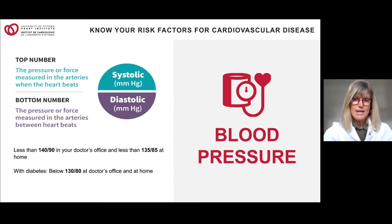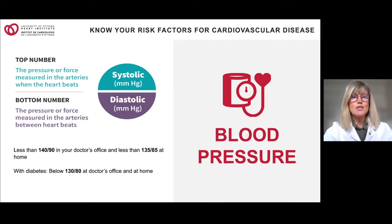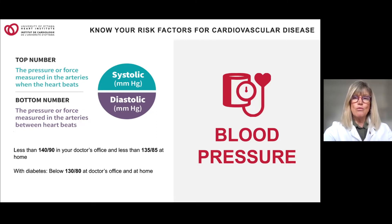If you are diabetic — already a risk factor — the blood pressure target is under 130 for the top number and under 80 for the bottom number, both in the doctor's office and at home. Patients often ask if one number is more important than the other — both are of equal importance. With blood pressure medication, both numbers should be reduced. During exercise, the top number ideally goes up and the bottom number comes down.